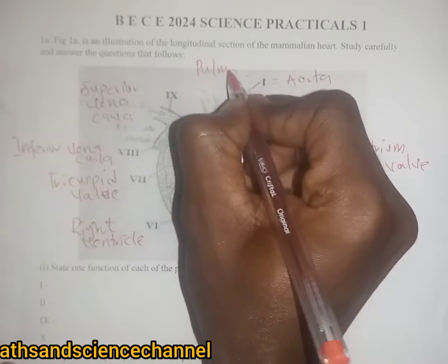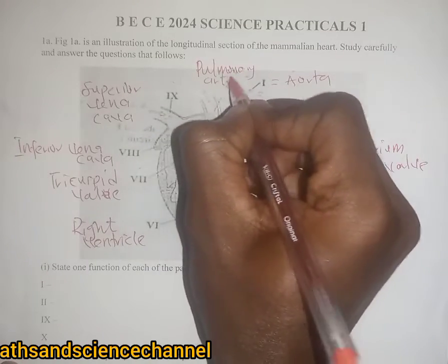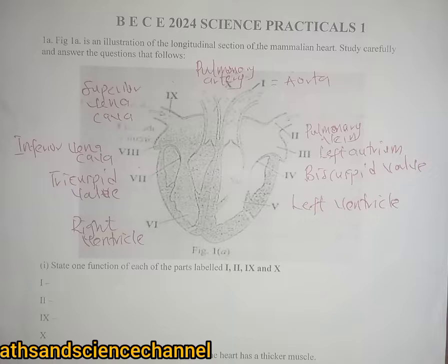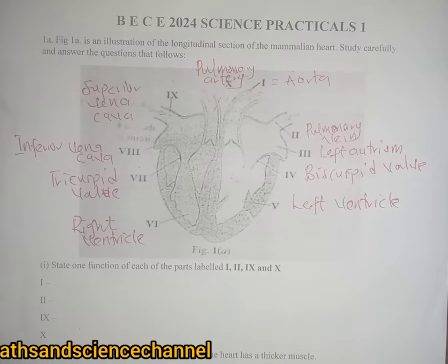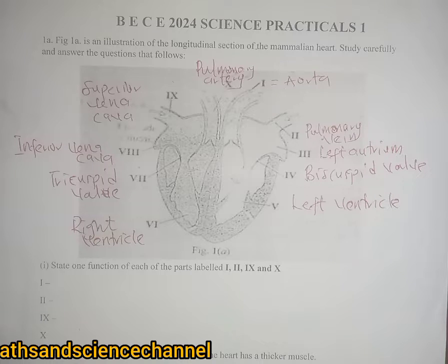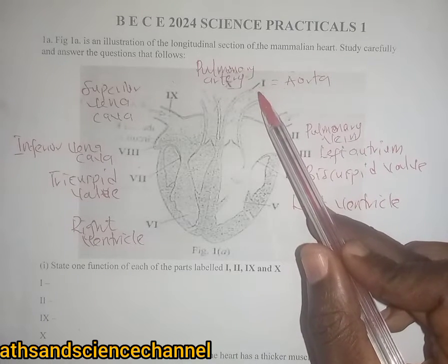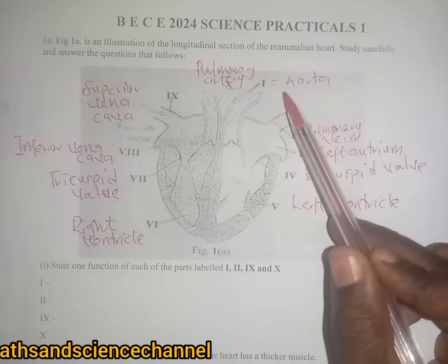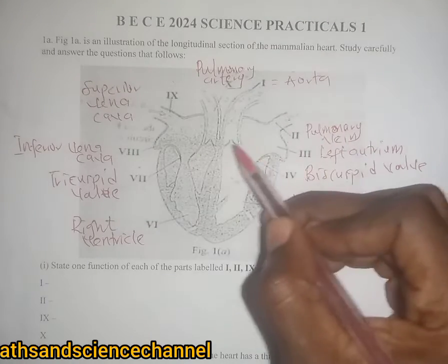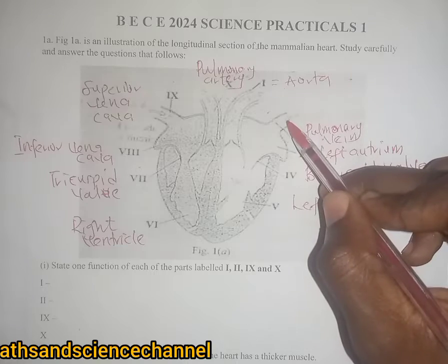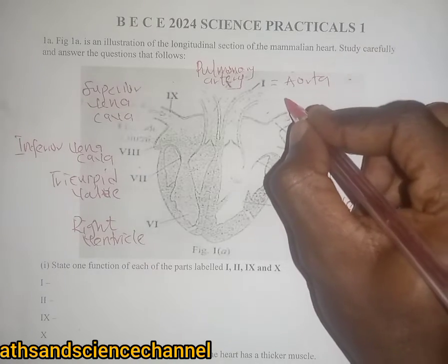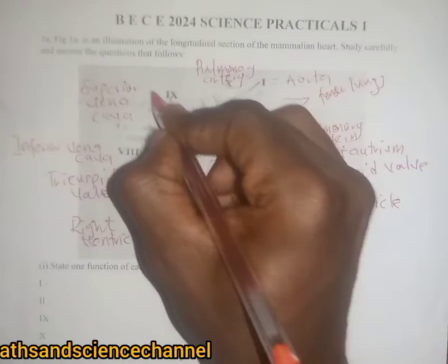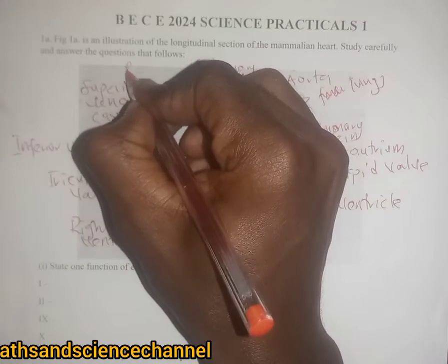Part x here is the pulmonary artery. Now since we know the parts, let's look at the function of each. Part i is what we call the aorta. This side here — everything is coming from the lungs, and this part here is from the heart.